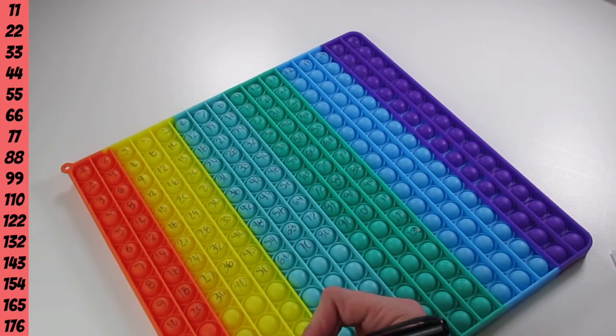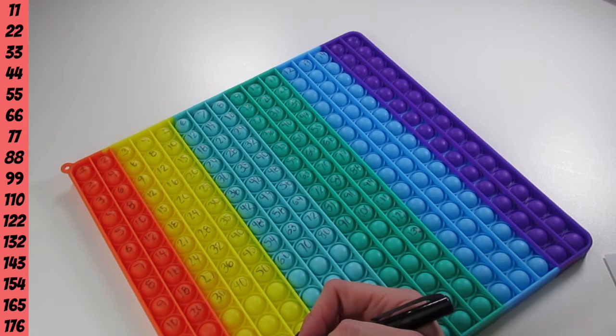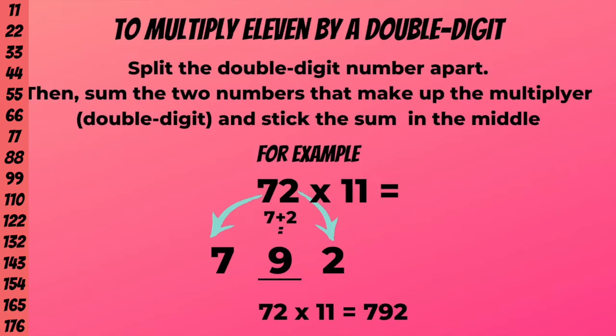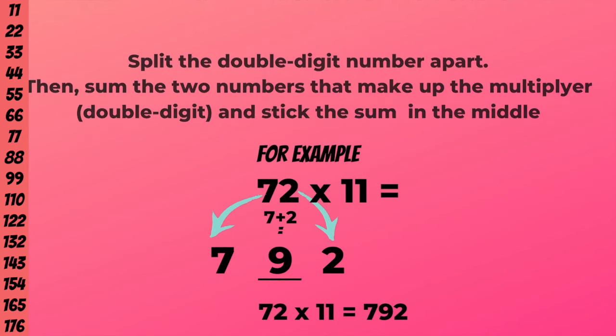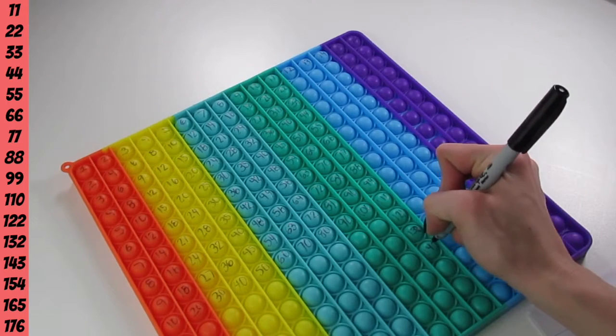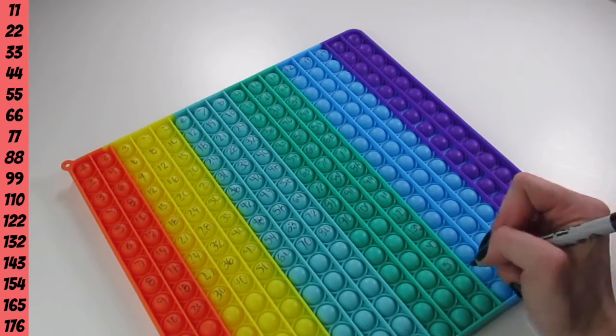Now to multiply 11 by a two-digit number, there's a trick. You split the double-digit number apart, and then you add the two digits of that two-digit number together, see the 7 and 2, which makes 9, and you stuff it right in the middle, and that is your answer.